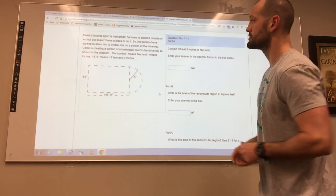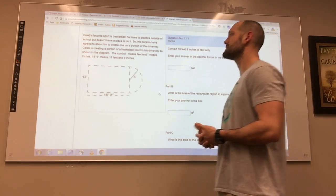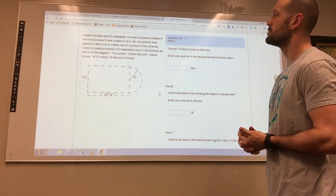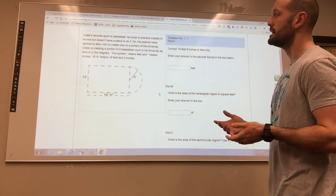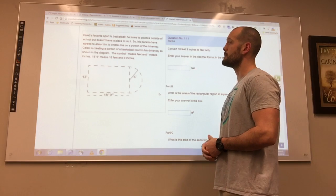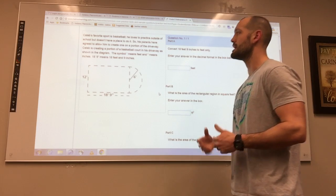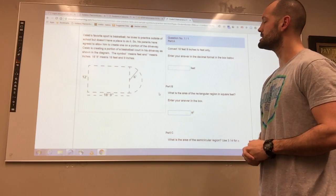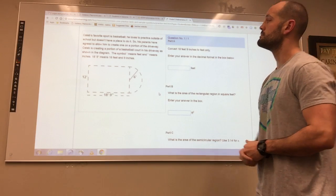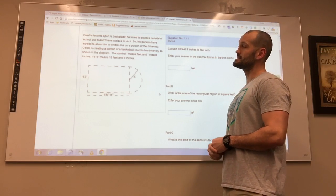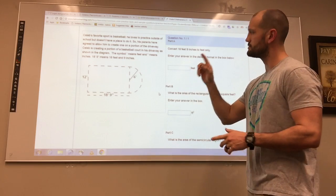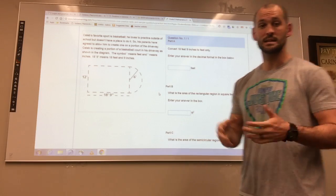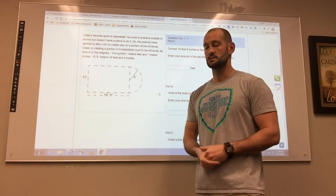Caleb's favorite sport is basketball. He loves to practice outside of school but doesn't have a place to do it, so his parents have agreed to allow him to create one on a portion of the driveway. Caleb is creating a portion of a basketball court in his driveway as shown in the diagram. The symbol apostrophe means feet and the quotes means inches. 18 apostrophe 9 quotes means 18 feet and 9 inches.